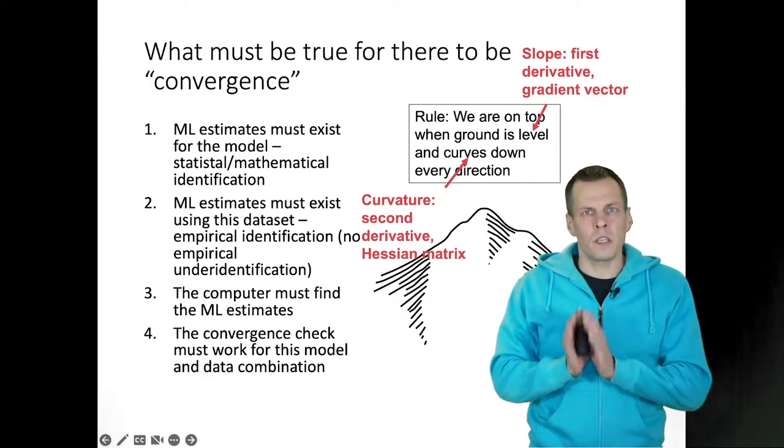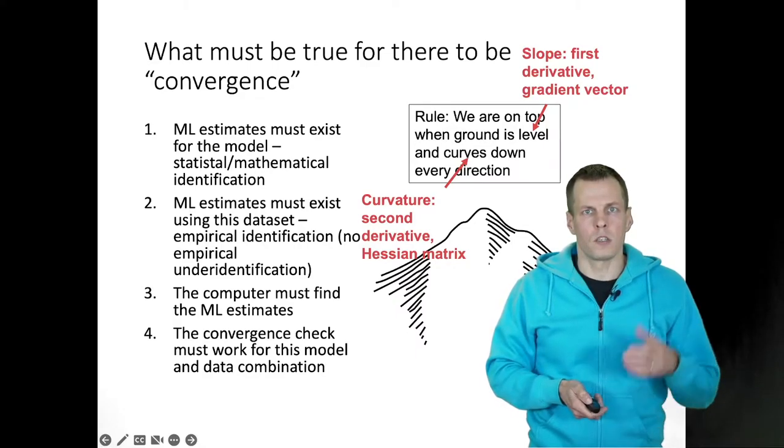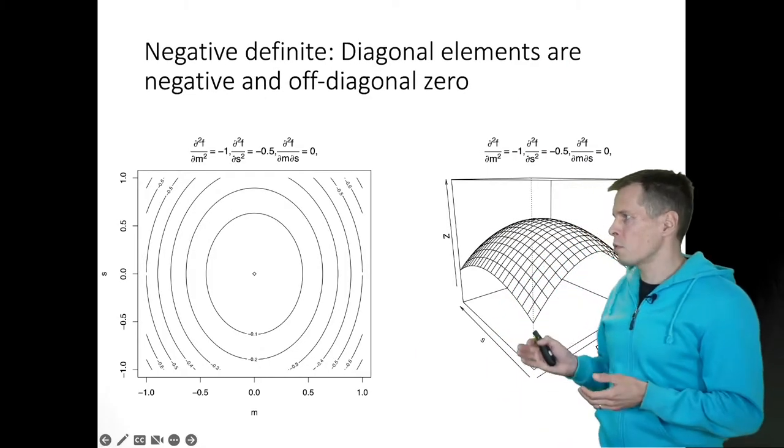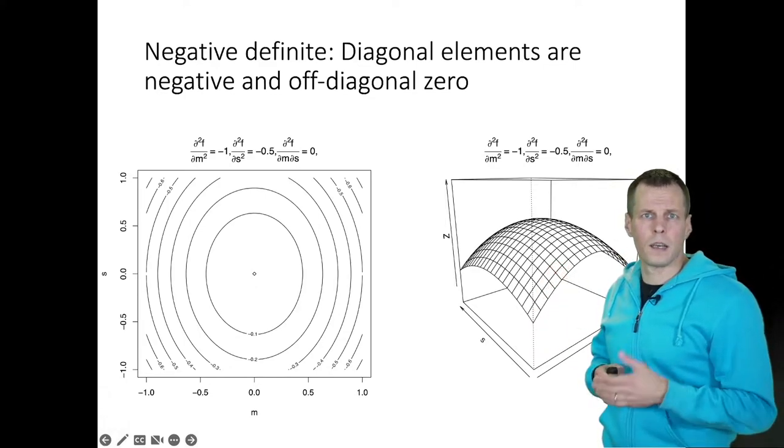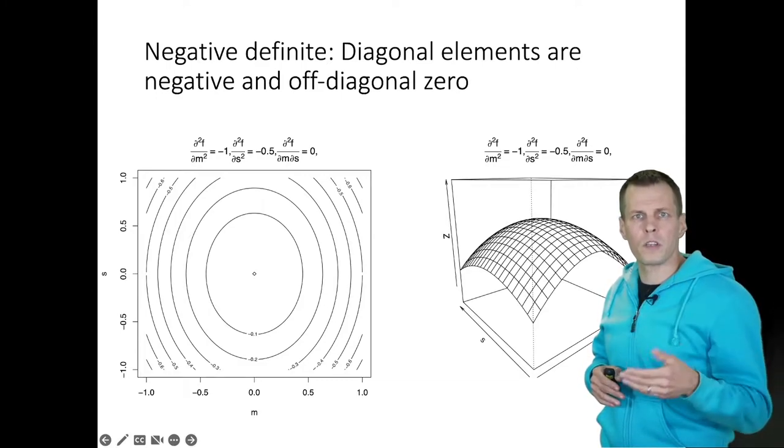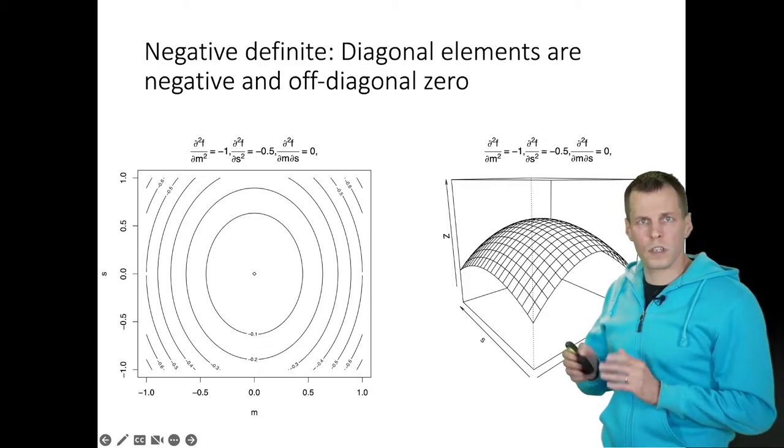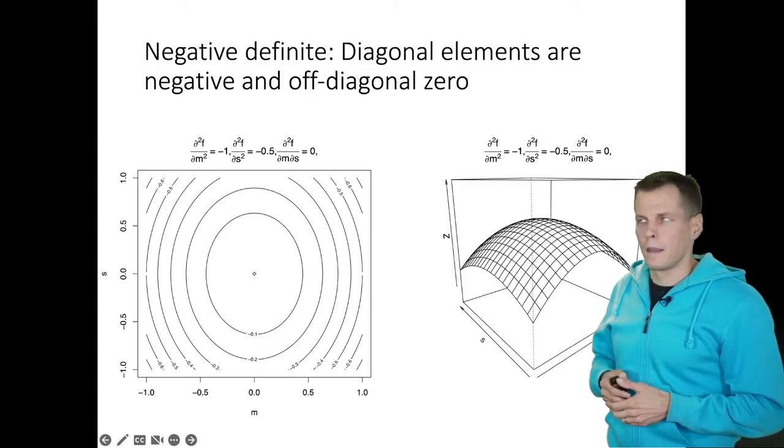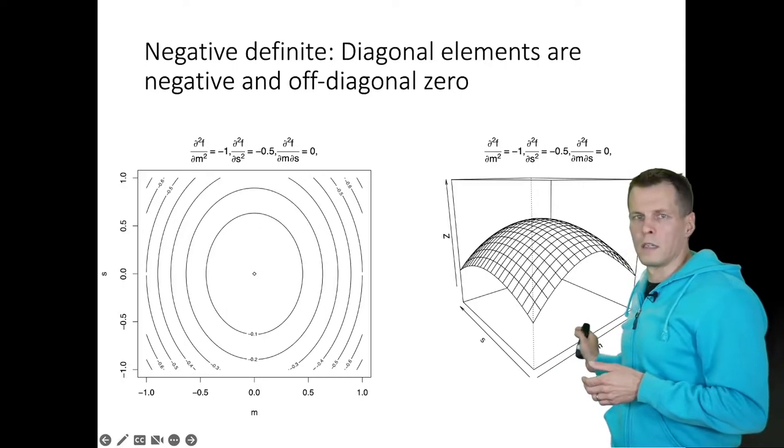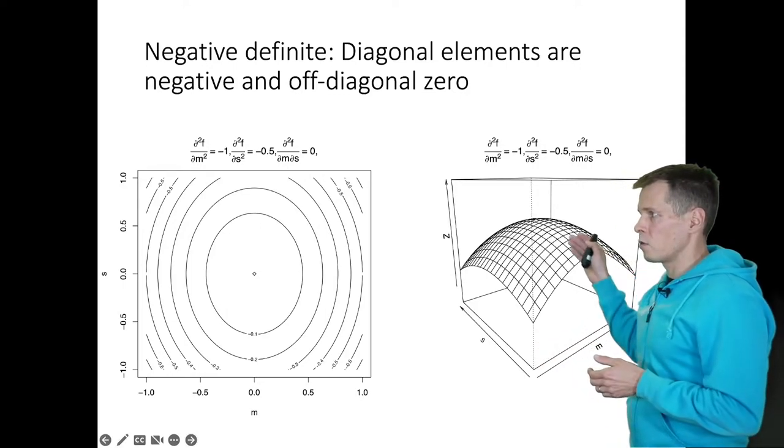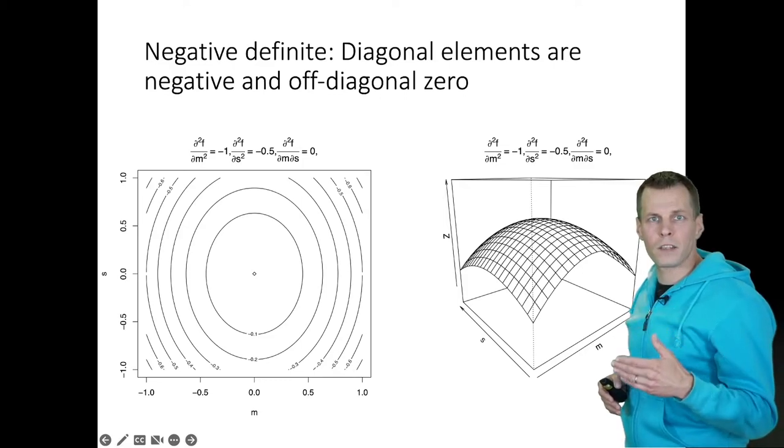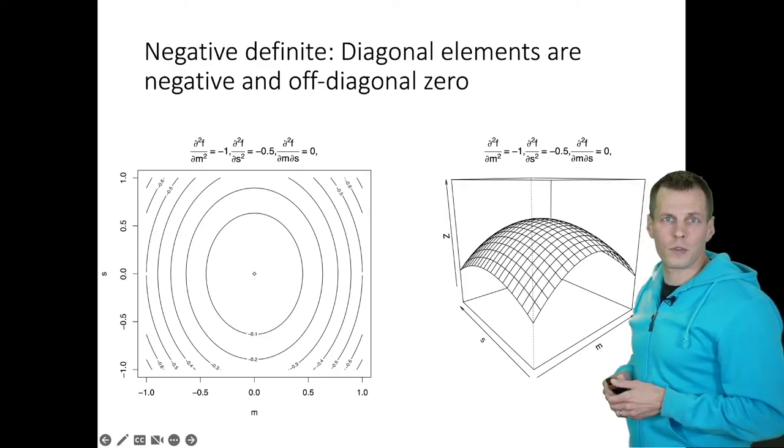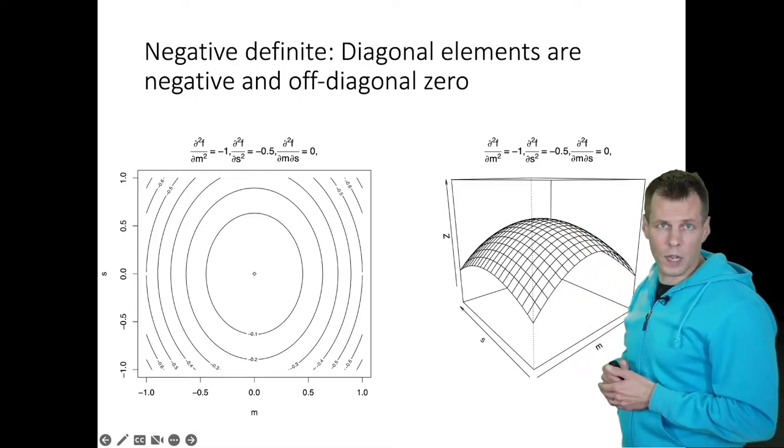When we try to really visualize a Hessian matrix, it's useful to take a look at different surfaces. We have a maximum likelihood surface here for an estimation problem where we are trying to estimate the standard deviation and mean of a normal distribution for some sample. We can see that the maximum of the likelihood is right here when standard deviation and mean are at certain values.